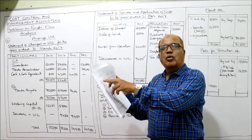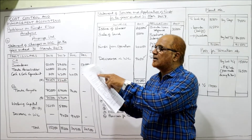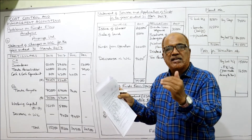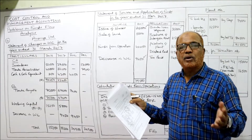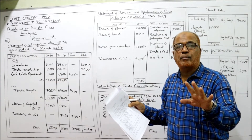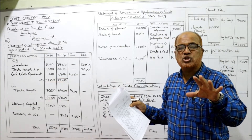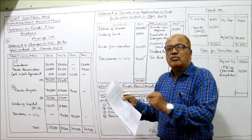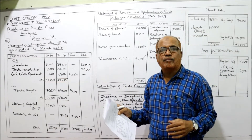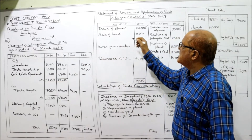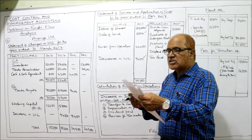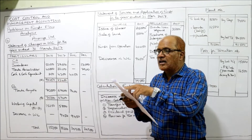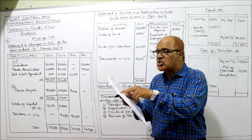Note number 2: tangible fixed assets — land, last year 1 lakh, current year 95,000. The value of land has decreased. Since there is no depreciation on land — land is a non-depreciable asset, depreciation is never provided on land — when land value decreases it means it was sold. So sale of land 5,000 is taken on the source side.